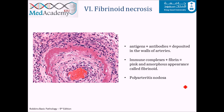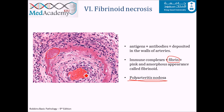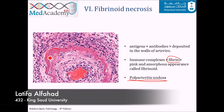Fibrinoid necrosis is an uncommon type very characteristic of certain diseases, such as polyarteritis nodosa — an autoimmune disease. Antigen-antibody reactions form immune complexes that deposit in the walls of arteries. Fibrin in the arterial wall binds to these immune complexes, producing a pink, amorphous appearance called fibrinoid. On the slide, you can see the arterial lumen filled with red blood cells, and the fibrinoid necrosis visible in the arterial wall. This concludes the discussion of necrosis.